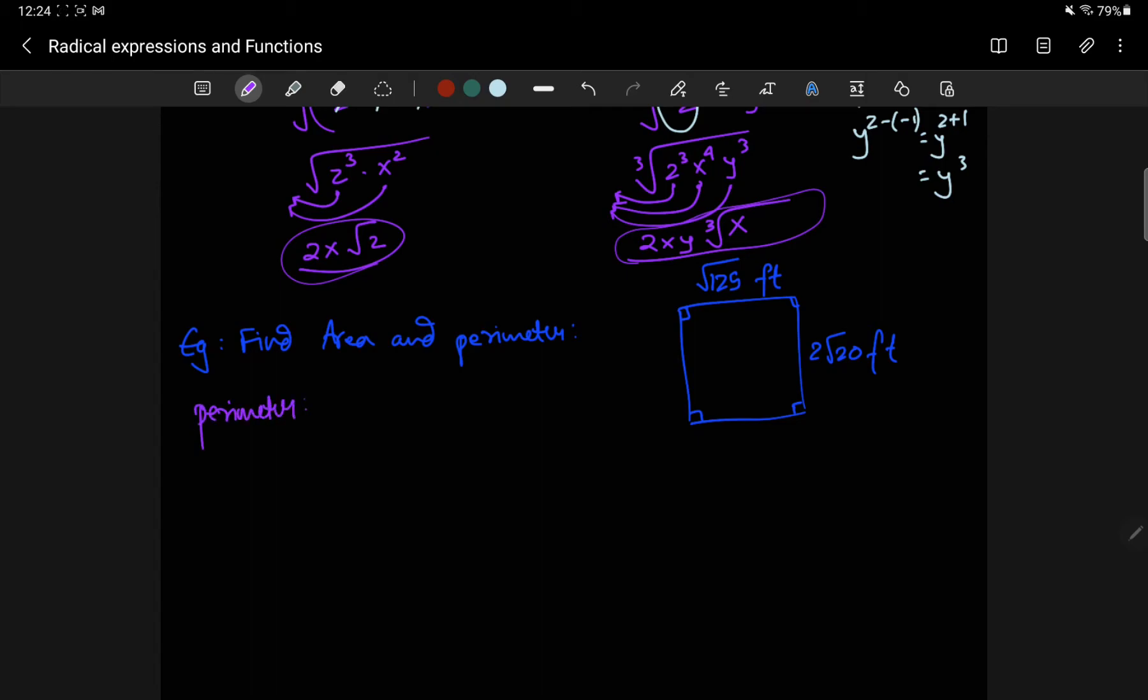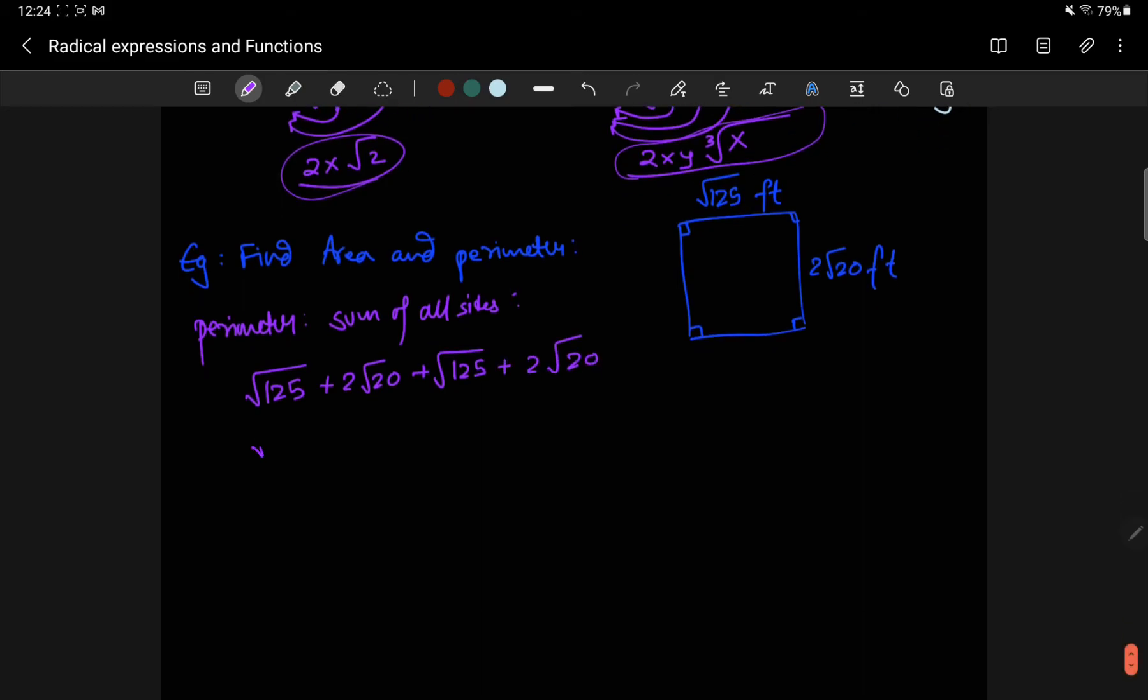Perimeter, what is perimeter? It's just the sum of all the sides. So, I'm adding root 125 to 2 root 20 to another copy of root 125 to another copy of 2 root 20.